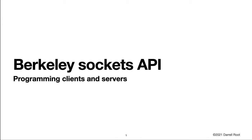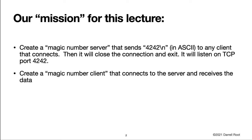Today I'm going to introduce the Berkeley Sockets API. Our mission for this lecture is to create a magic number server that sends 4242 and then a newline in ASCII to any client that connects. Then it will close the connection and exit. It will listen on TCP port 4242. Then we're going to create a magic number client that connects to the server and receives the data.